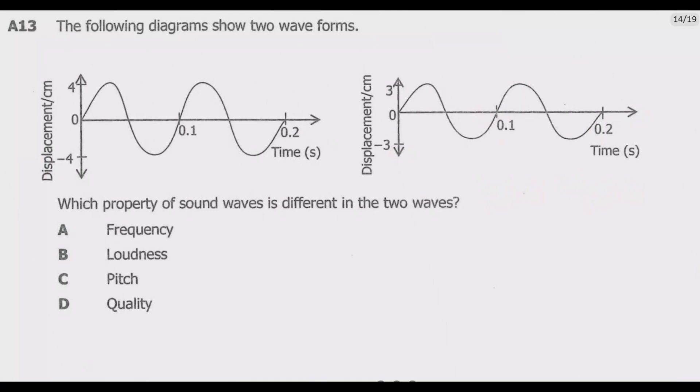Question A13: The following diagrams show two wave forms. Which property of sound wave is different in the two waves? If you look at the first wave, it has two waves. What is the amplitude? The amplitude is four. What is the amplitude here? The amplitude is three.